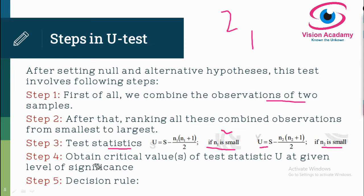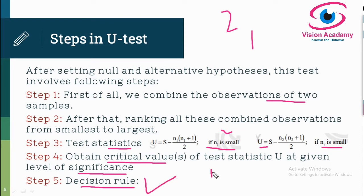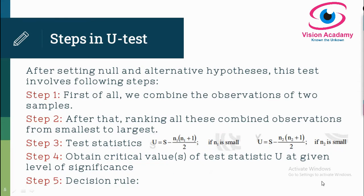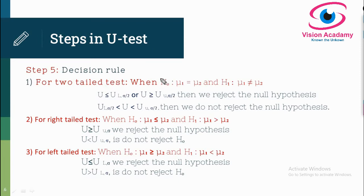After computing the test statistic, obtain the critical values from the Mann-Whitney U table for the given level of significance. I will show you the table values when solving a problem in this video. Finally, compare the calculated U value with the critical value to make a decision about whether to accept or reject the null hypothesis.